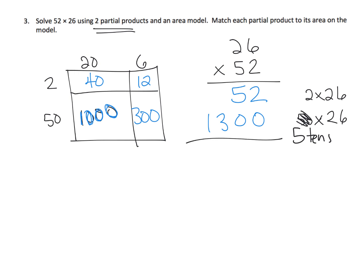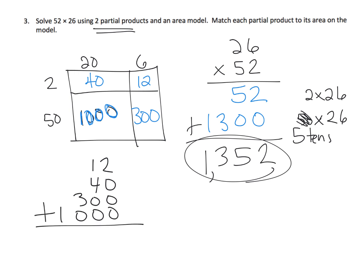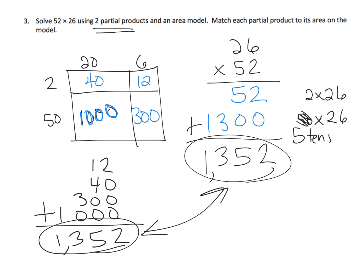Adding our two partial products we get 2,531 — wait, that's 1,352. The answer is 1,352. And if we add all four individual partial products — 12, 40, 300, and 1,000 — we get the exact same answer. Parents and teachers, if the two partial products method isn't tracking with students yet, it's okay to stick with the area model using four partial products.